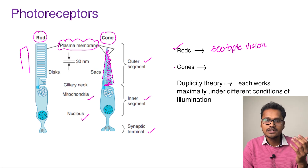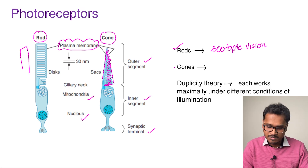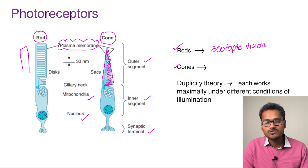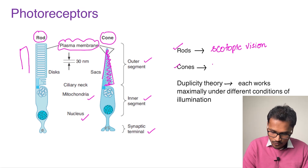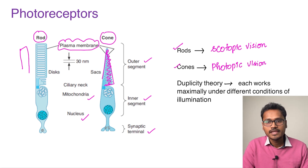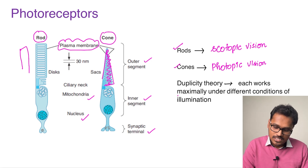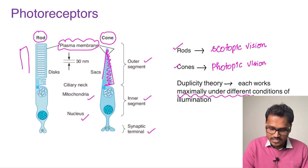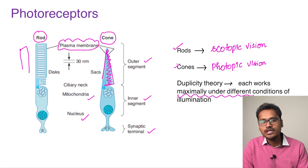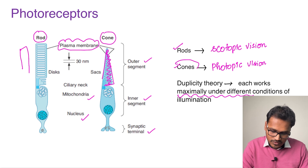Rods detect grey shades; they do not perceive colors. Color perception is done with the help of cones, which is why cone-based vision is called photopic vision. This theory — that rods and cones each work maximally under different conditions of illumination — is called the duplicity theory. Under low illumination, rods work better, whereas under bright illumination, cones work better for color perception.